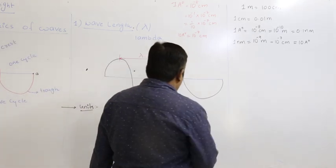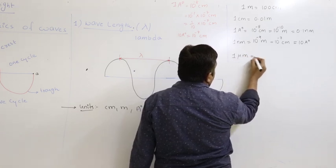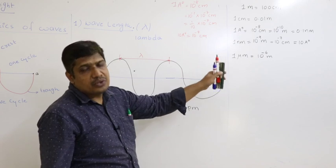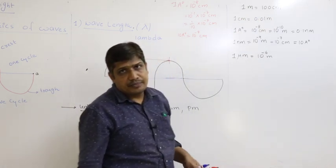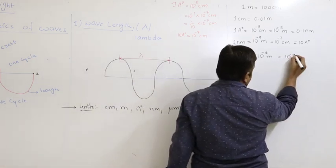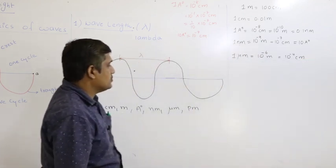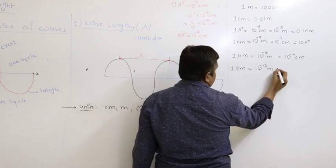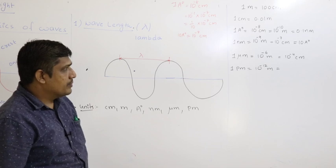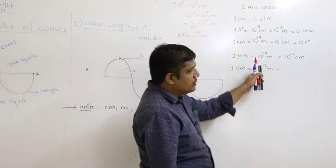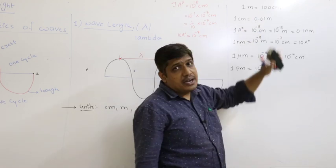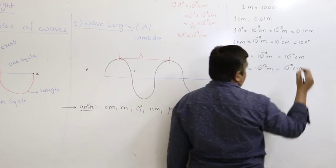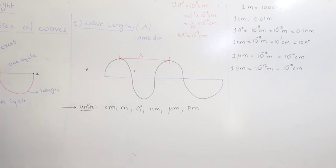Those are the units and their conversions for wavelength. Wavelength is defined as the distance between two successive crests and is expressed in these different units: meters, centimeters, angstroms, nanometers, micrometers, and picometers.